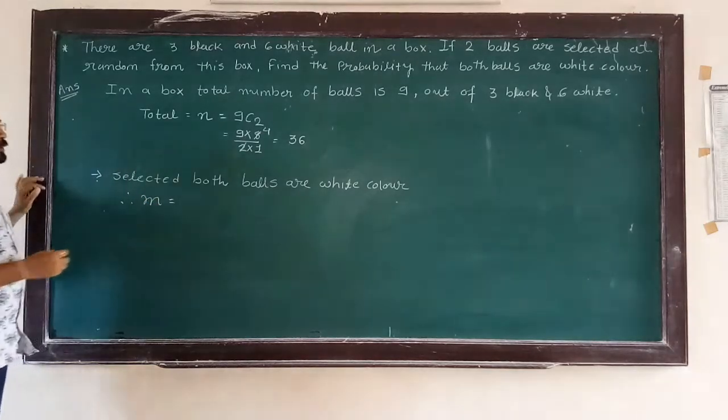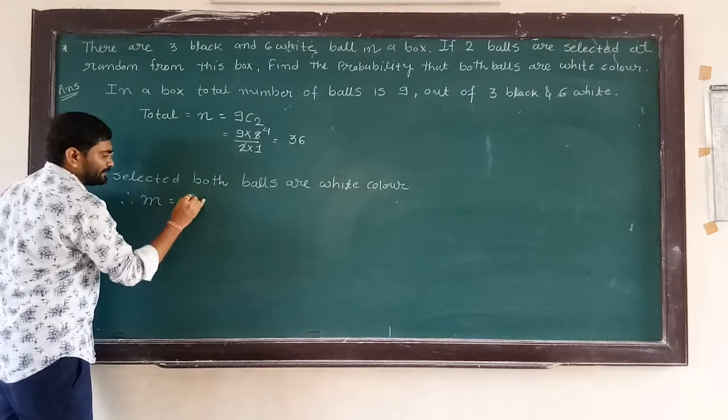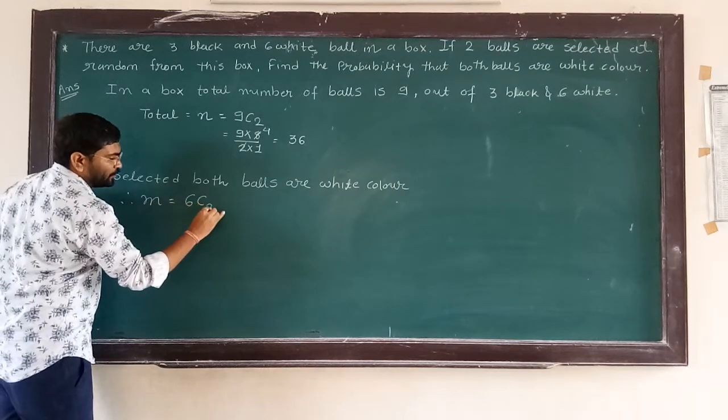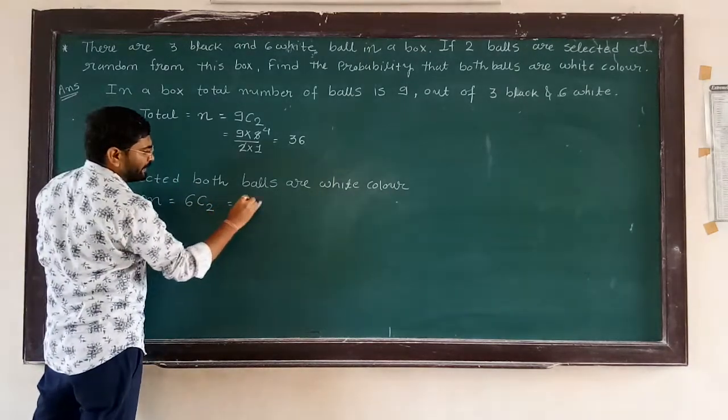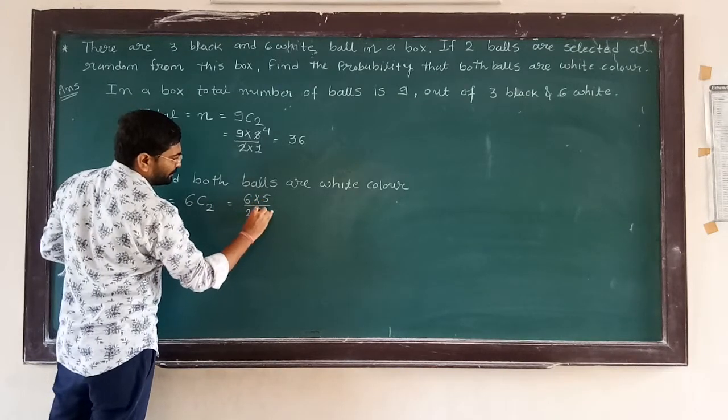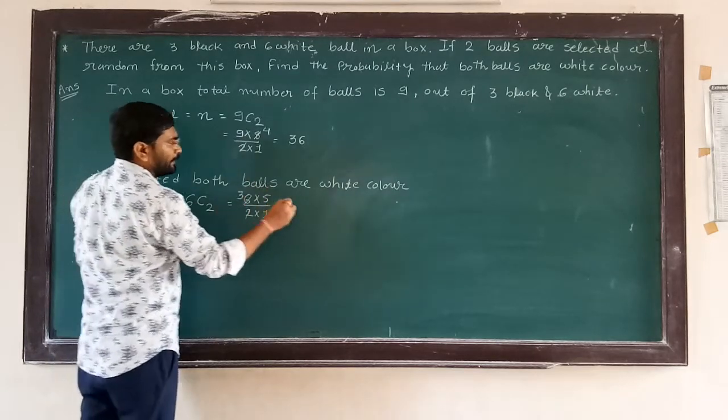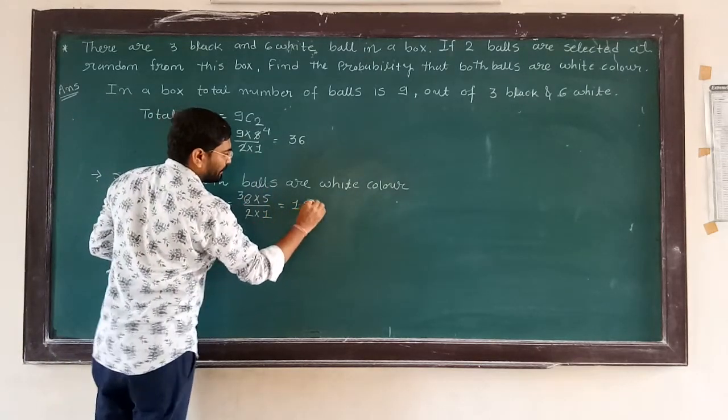So total white ball is 6, out of that we are selecting 2. 6C2 means 6 into 5, 2 into 1. Here 3 into 5, answer is 15.